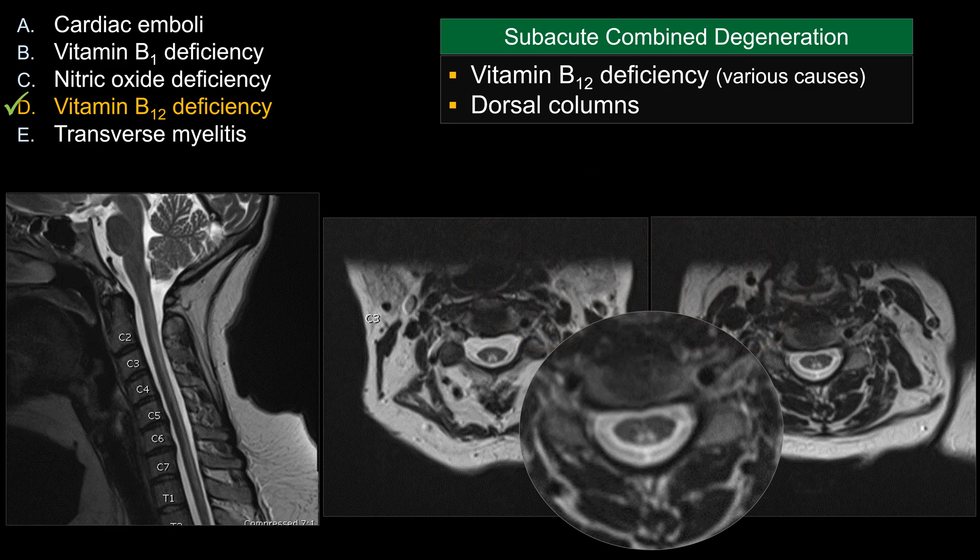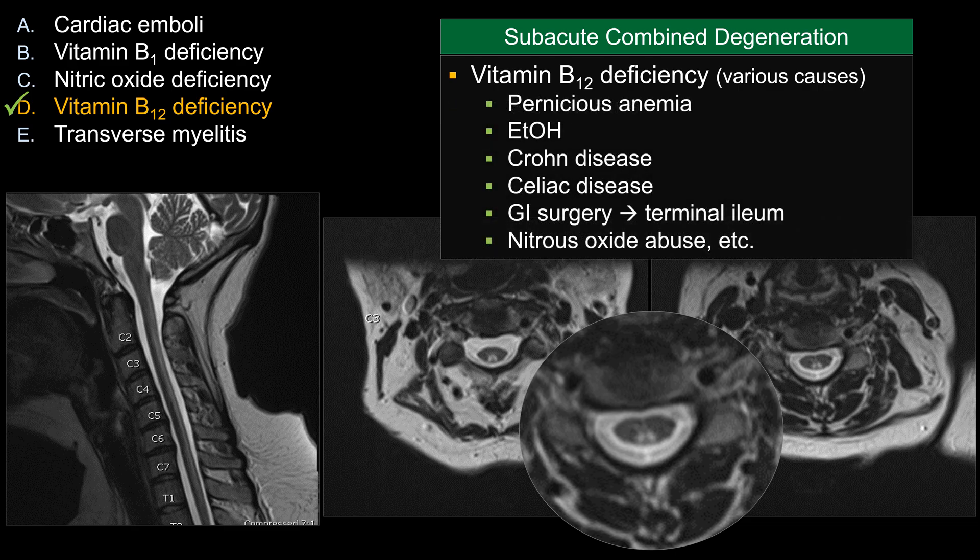Any cause of vitamin B12 deficiency can produce this pattern. In the United States, one of the more common causes is pernicious anemia. Chronic alcoholism can also do this, as can various GI diseases such as Crohn's disease and celiac disease. GI surgery, especially surgery that affects the terminal ileum — where B12 is absorbed — can also cause subacute combined degeneration.